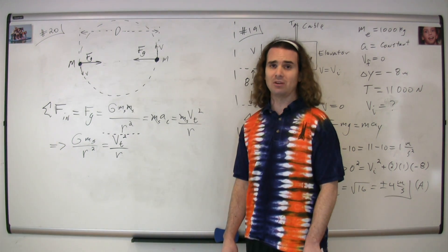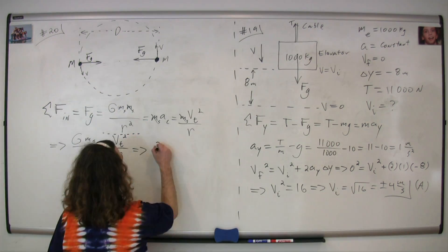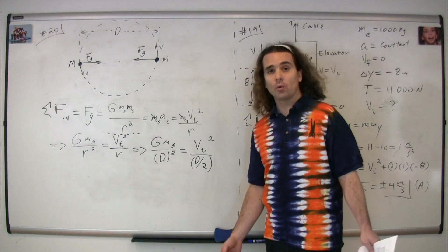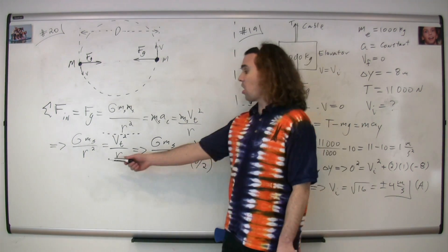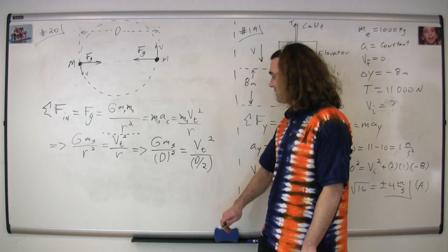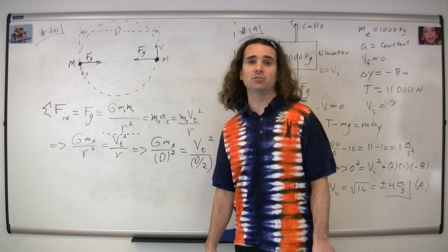When we substitute in, on the left-hand side r equals capital D. On the right-hand side, r equals D over 2.